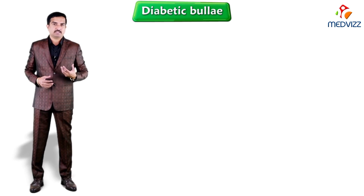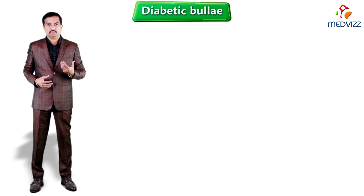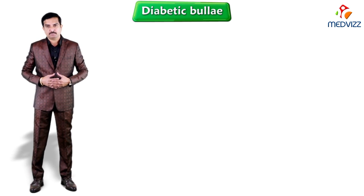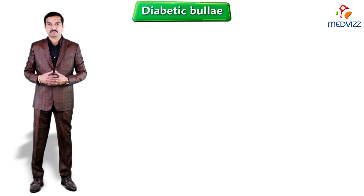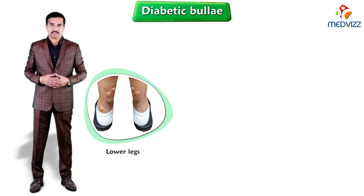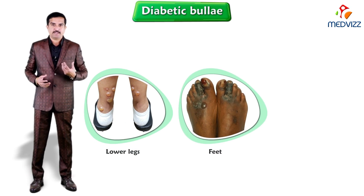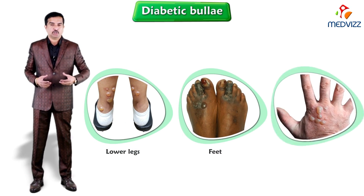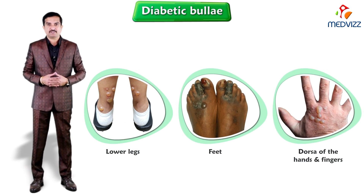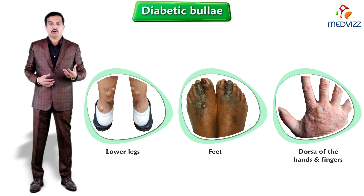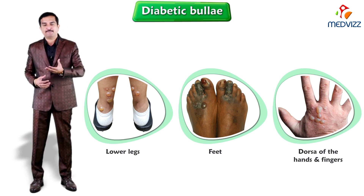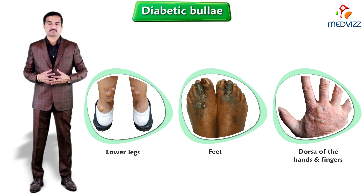Diabetic bullae are large intact bullae that arise spontaneously on the lower legs, feet, and dorsal of the hands and fingers on a non-inflamed basis.